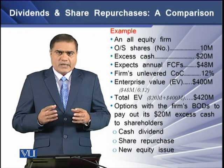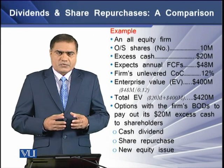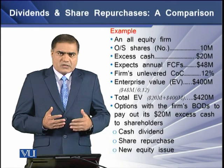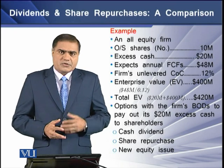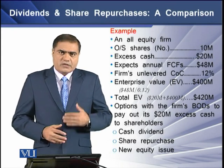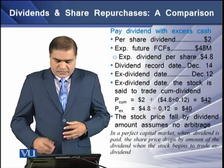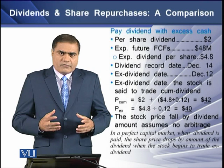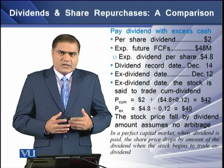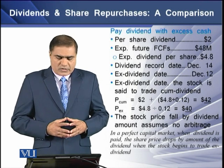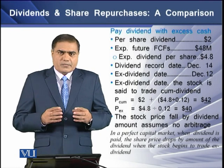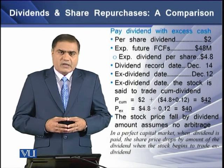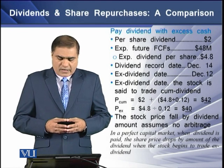The firm's board of directors has three options to pay out the extra $20 million to shareholders: cash dividend, share repurchase, or issuance of new equity shares. Under the first option, the firm pays a cash dividend. The current per share dividend is $2 each, and the firm expects future cash flows of $48 million.